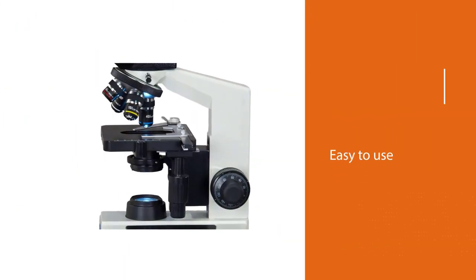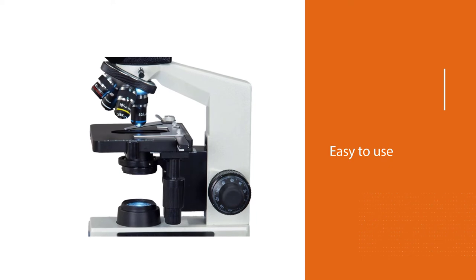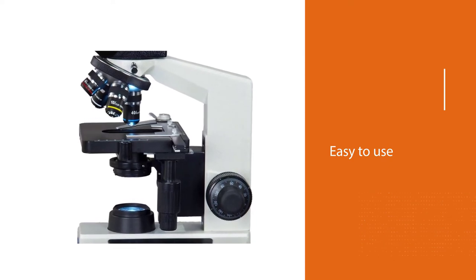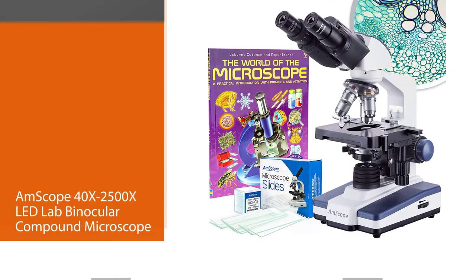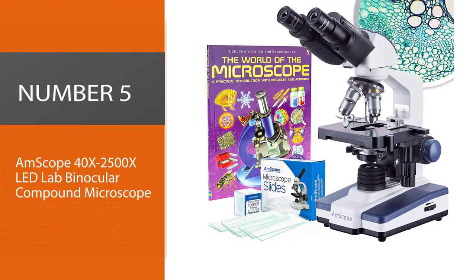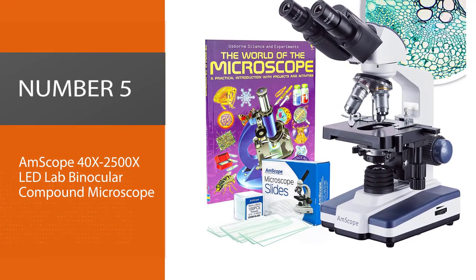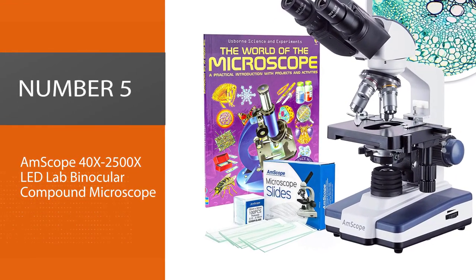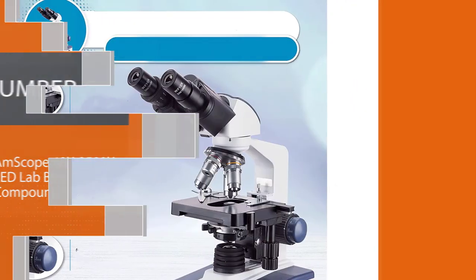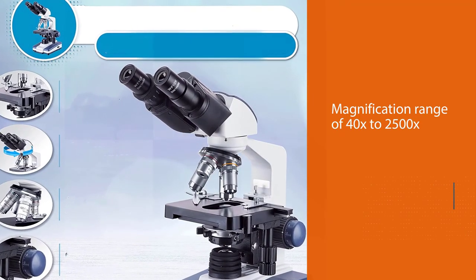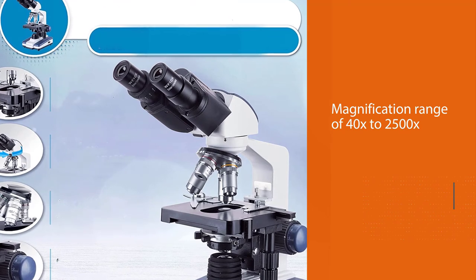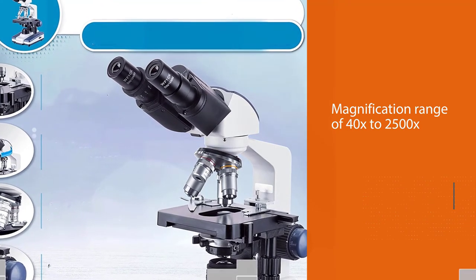Number five: AmScope 40x to 2500x LED lab binocular compound microscope. An AmScope LED lab digital microscope, which is another impressive compound microscope that has a high magnification range of 40x to 2500x. This is not just a digital microscope but a full set that comes with accessories and manuals.